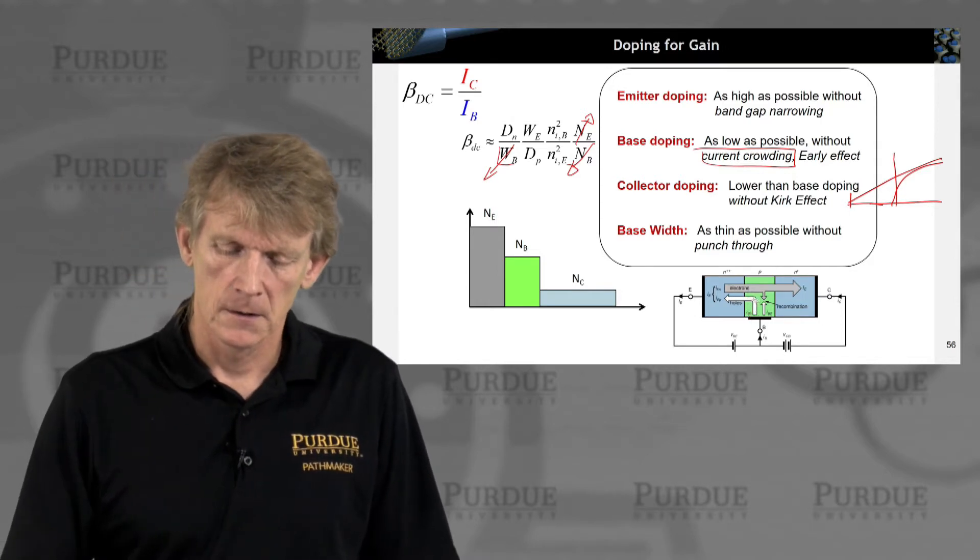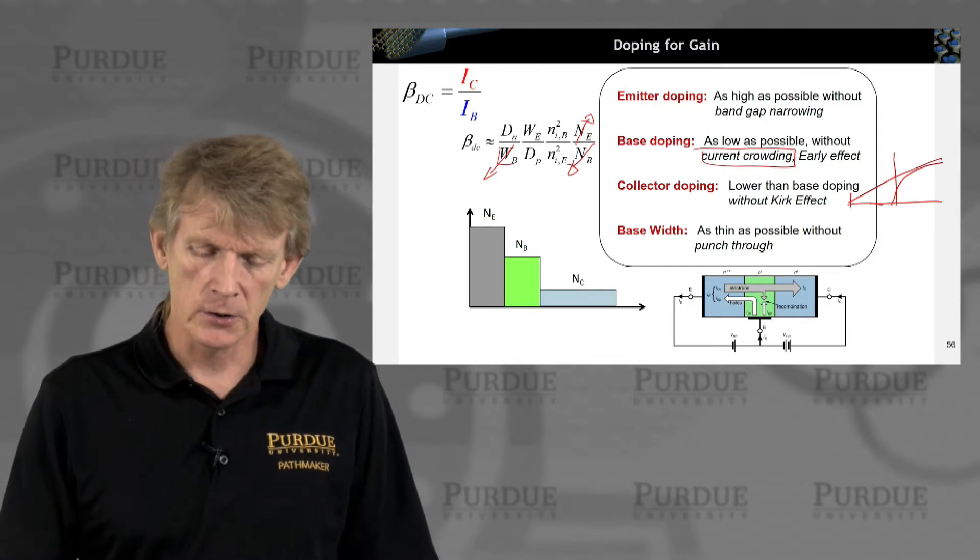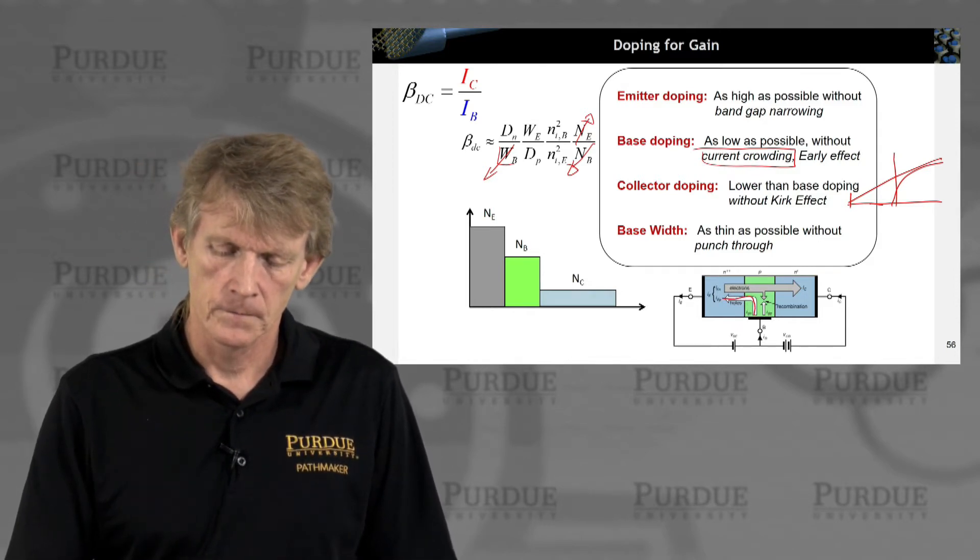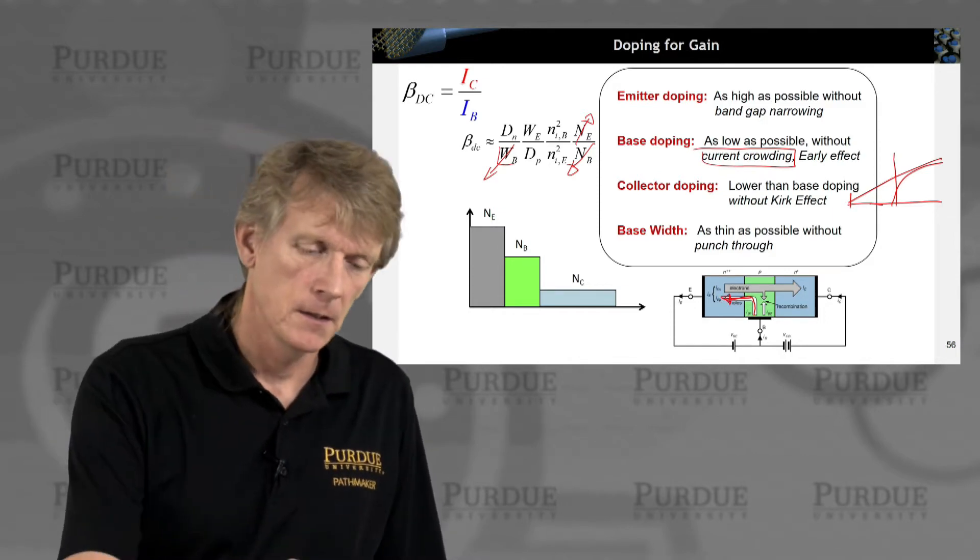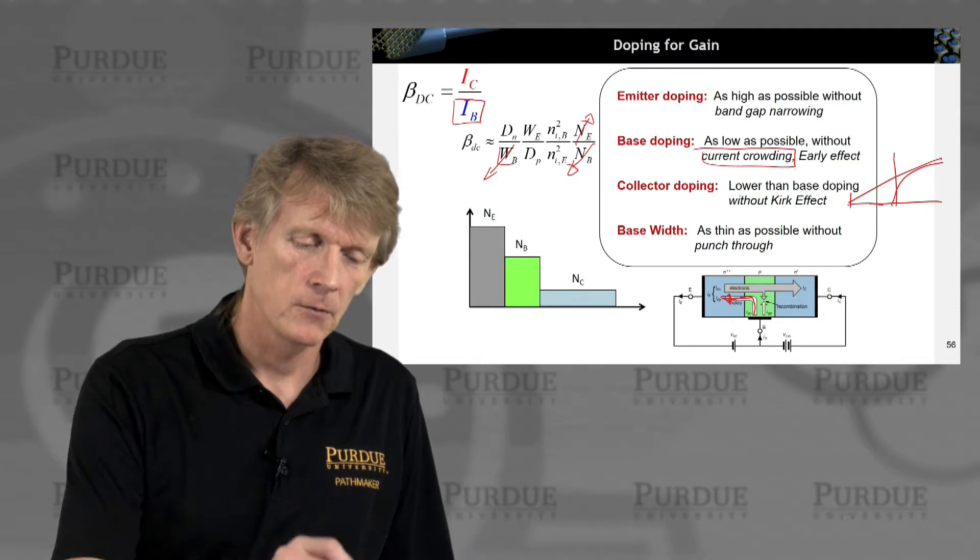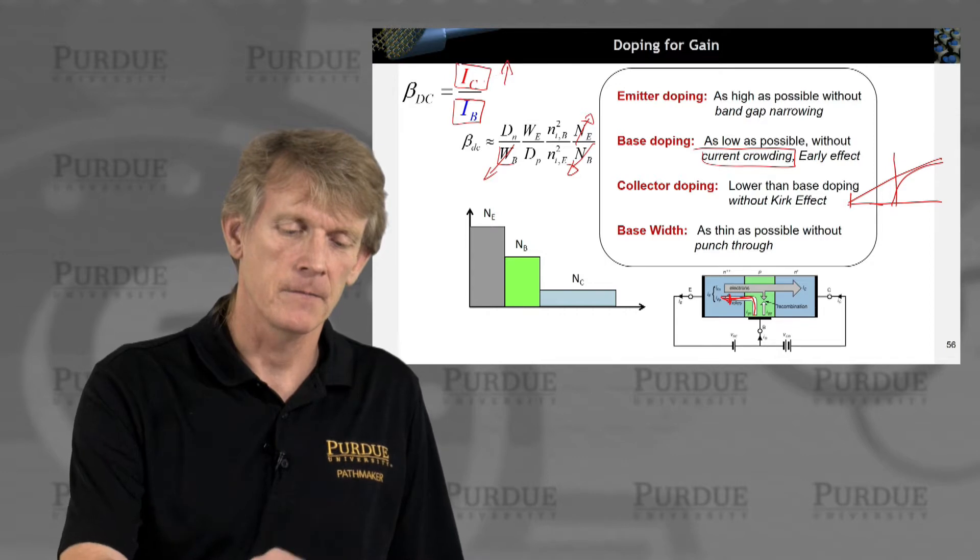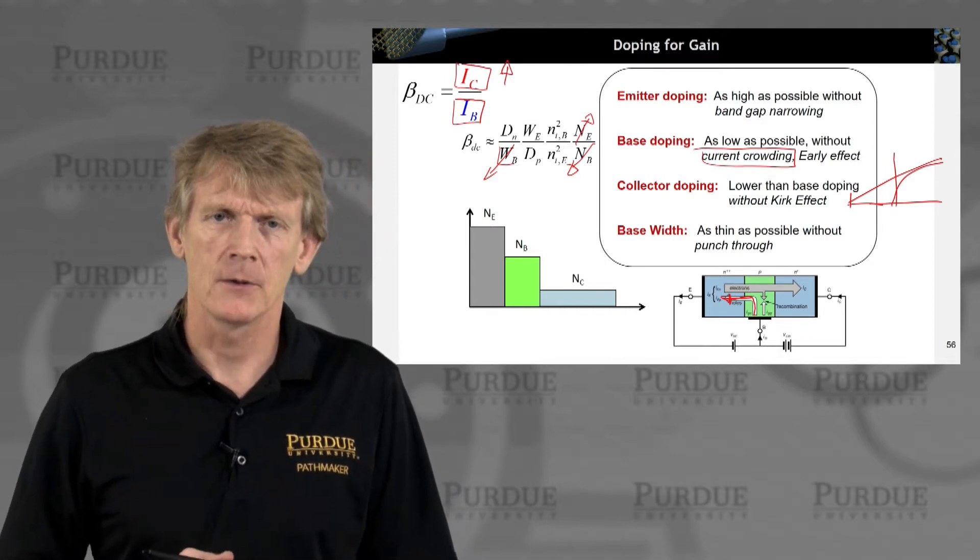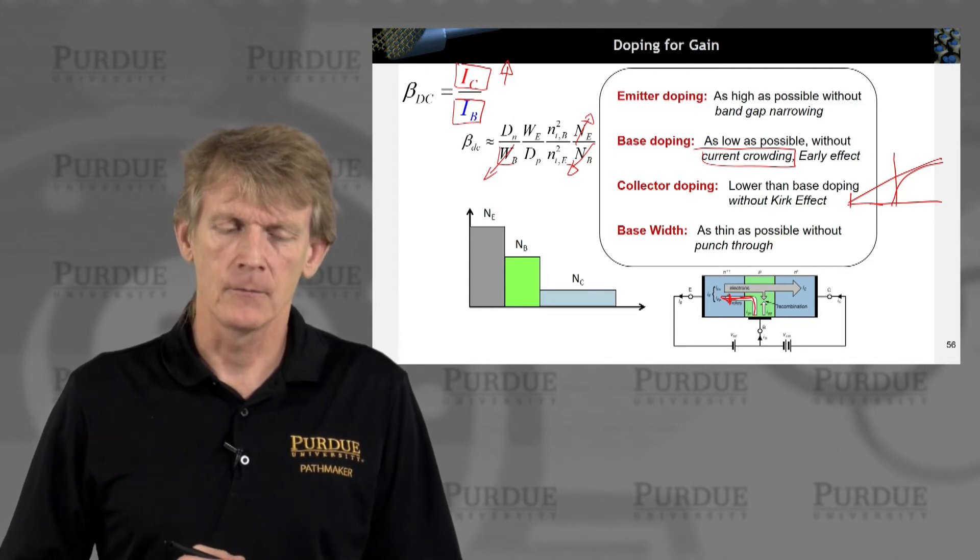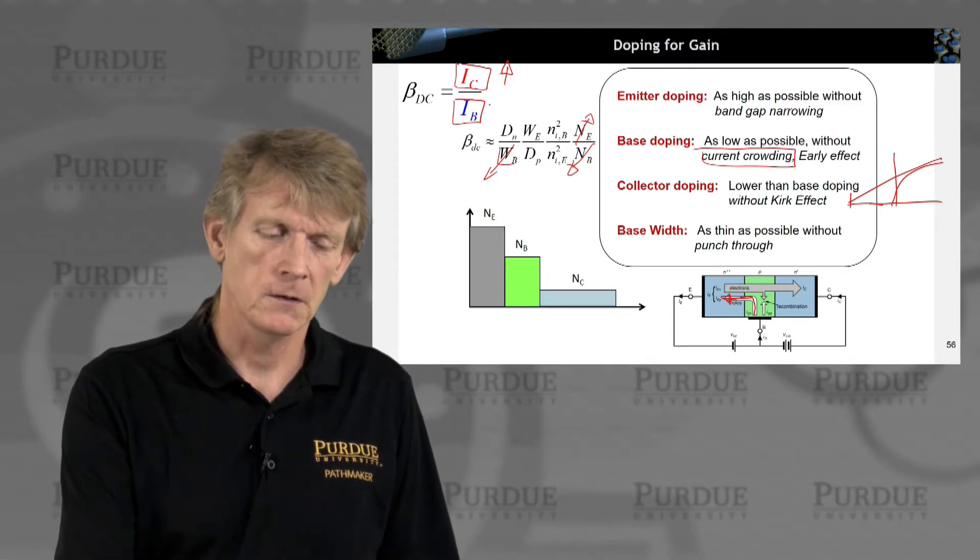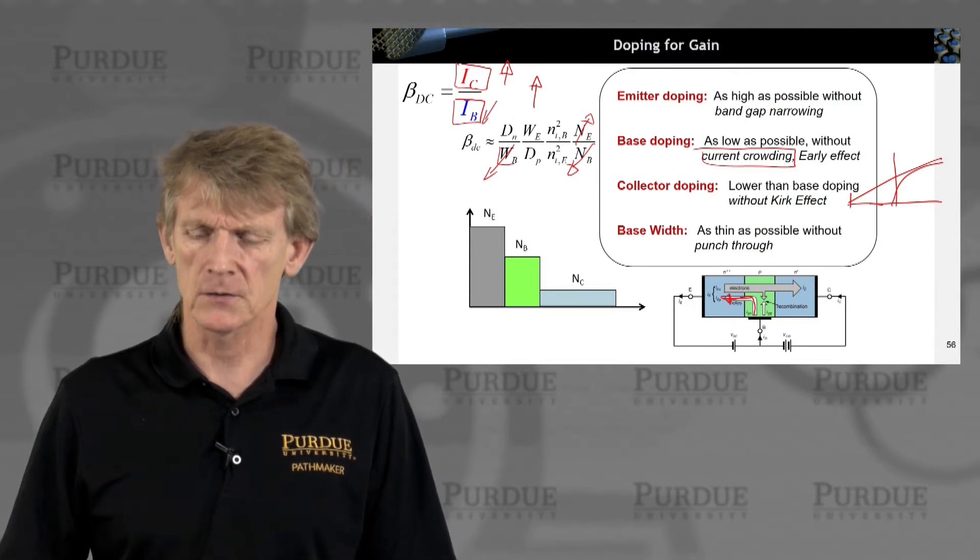One thing we can also discuss now is could you do something to reduce this hole flow? So far, we have dealt with what can we do to make IC effectively larger. We have not talked about a recipe to really make the hole flow smaller. Reducing this guy will increase beta, right? So let's look at a strategy for that.